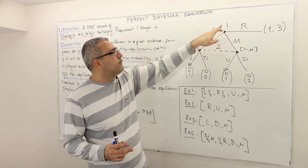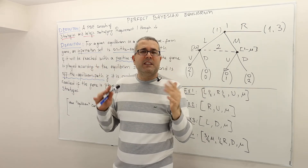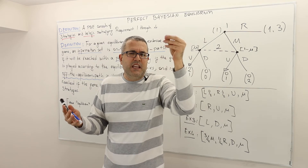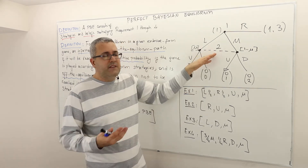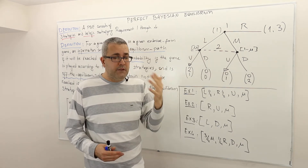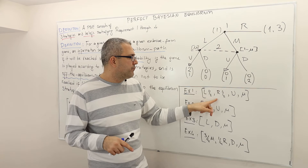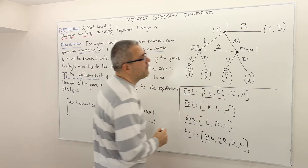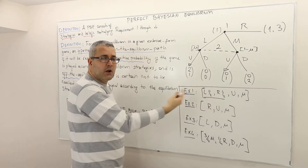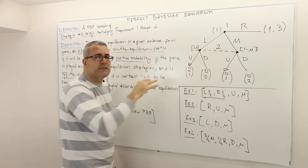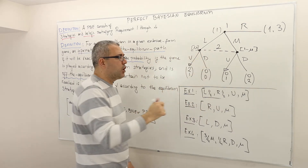In this game, there are two info sets. The first info set is the initial info set. Obviously, you cannot say the initial info set is on or off the equilibrium path, so we are talking about info sets other than the initial one — basically the second player's information set. Whether it is on or off the equilibrium path depends only on the first player's equilibrium strategy. According to this strategy — one-half L, one-half R — with positive probability the first player is going to play left, so this information set can be reached. Hence, according to this equilibrium strategy profile, this information set is on the equilibrium path.